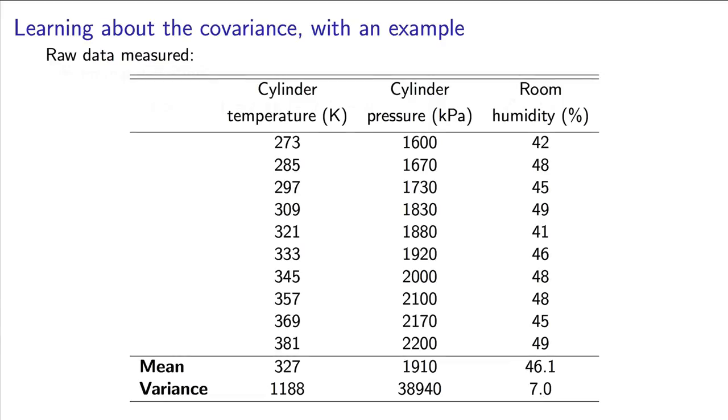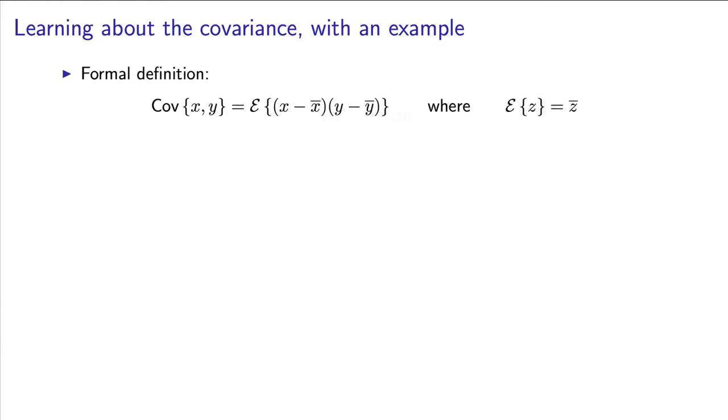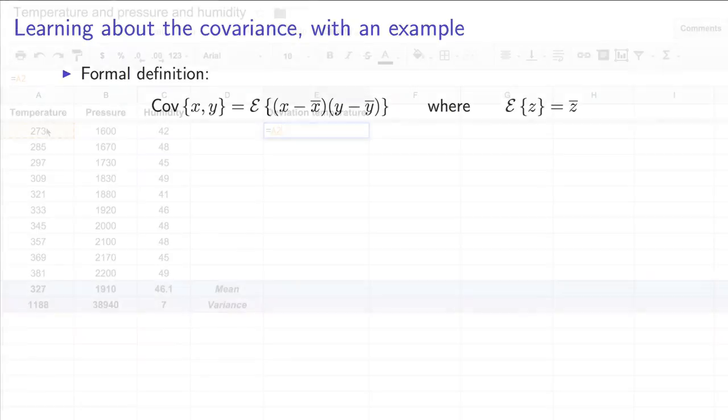The formal definition for covariance is that it is equal to the expected value of one variable x multiplied by y, where the variables x and y are in deviation form. There are a few unfamiliar things here. Firstly, inside the brackets, all we have done is mean-centered those vectors and created deviation variables for them.